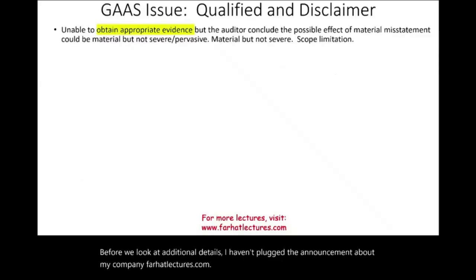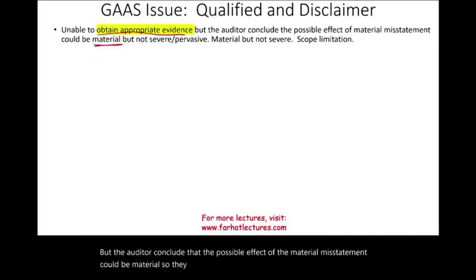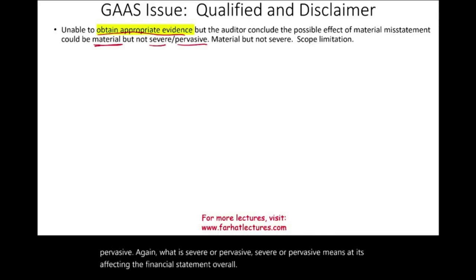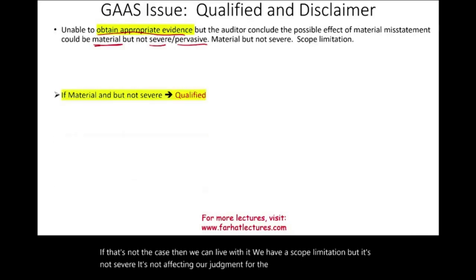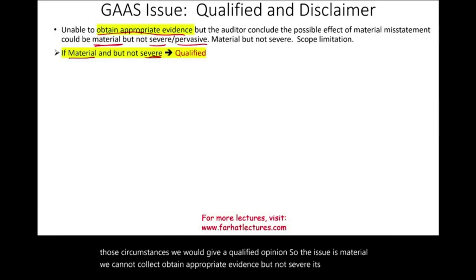If we are unable to obtain sufficient appropriate evidence, but the auditor concludes that the possible effect of a material misstatement could be material — but not severe and pervasive — then we can live with it. Severe or pervasive means it's affecting the overall financial statements. If the scope limitation is not severe, it's not affecting our judgment for the whole financial statement, and under those circumstances we would give a qualified opinion. The issue is material, we cannot obtain appropriate evidence, but it's limited to a certain area.